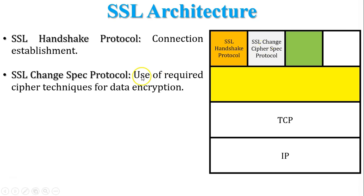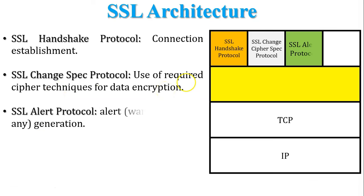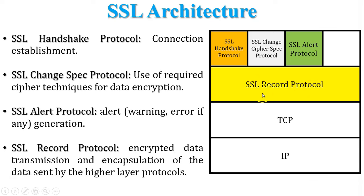The SSL Change Cipher Spec Protocol is used for required cipher techniques for data encryption. The third protocol of the higher level is SSL Alert Protocol. It is responsible to generate alert messages when a warning or error occurs before communication starts. The lower layer protocol is SSL Record Protocol. It is responsible for encrypted data transmission and encapsulation of data sent by the higher layer protocols.